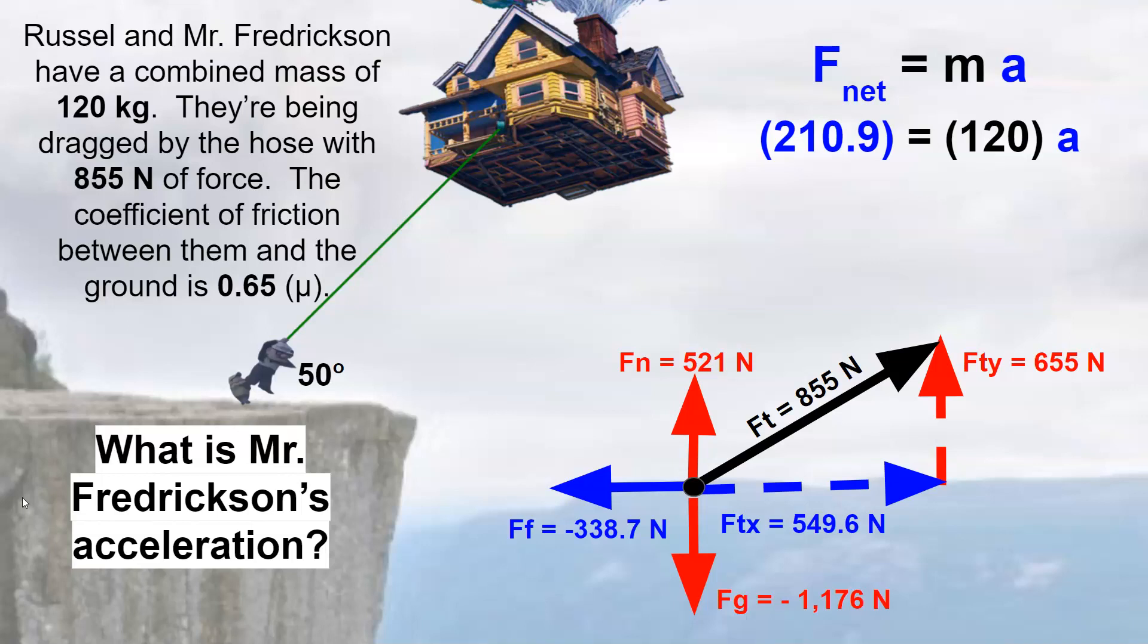Because our net force is positive, I'm anticipating a positive acceleration. So when I divide both sides by 120, I end up with an acceleration of 1.8 meters per second squared, which comes out positive as anticipated.